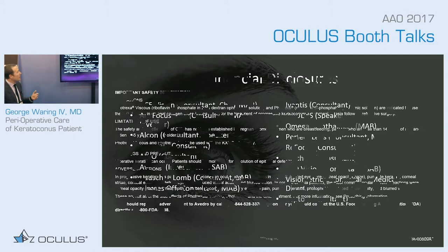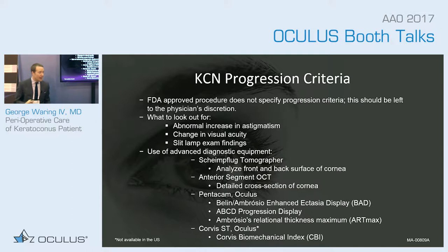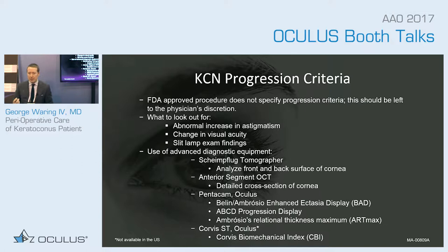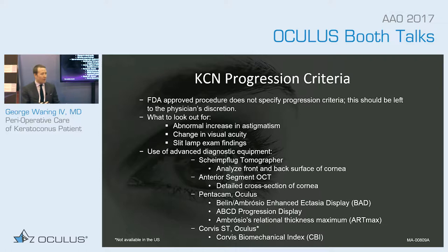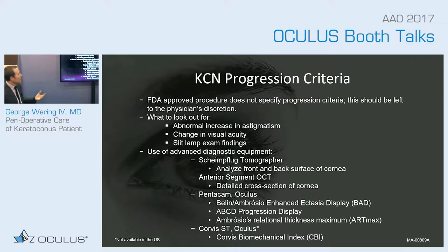These are my financial disclosures — I do speak on behalf of Oculus. The first thing we need to understand is that keratoconus is a progressive disorder. We can have mild, moderate, and rapid progression, but the challenge is objectively documenting progression. In the US, we're increasingly treating without waiting for progression, though the FDA approval for cross-linking is based on progressive keratoconus, so on-label treatment requires objective documentation of progression.